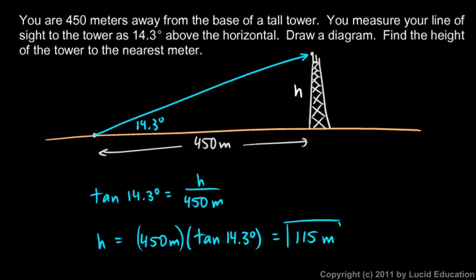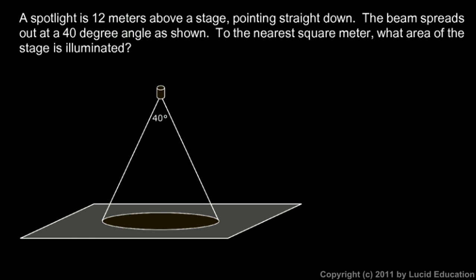One more. We're told that a spotlight is 12 meters above a stage. So up here is the spotlight, shining down. That's 12 meters, so down to the center of the circle of light, that's 12 meters. So it illuminates this area on the stage. Pointing straight down as we see in the diagram, it spreads out at a 40 degree angle as shown.